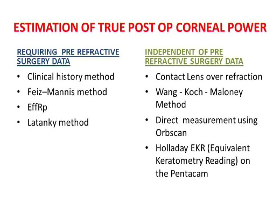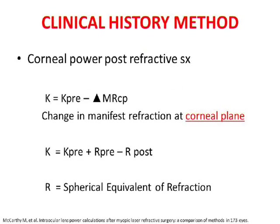Depending on what data you have, you decide which formula and which IOL power to use. The first option is the clinical history method. For this method, you should have everything available: your pre-LASIK keratometry, your pre-LASIK refraction, your post-LASIK refraction prior to cataract development, and your post-LASIK keratometry. Essentially, all the techniques have their own formulas — you feed those values in and it gives you the IOL power or the keratometry. In this case, it gives you the post-surgery keratometry based on a formula.